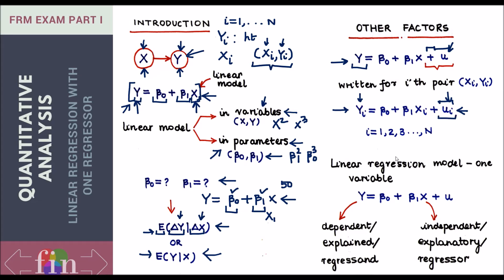Let's put some terms in front of us. This is a linear regression model — specifically a one-variable model, because only a single x is being used to explain the variation in y. In later chapters we will include multiple variables. Y is given several names: it is called the dependent variable, or the explained variable since we are trying to explain the variation in y, or in more technical terms it is called the regressand.